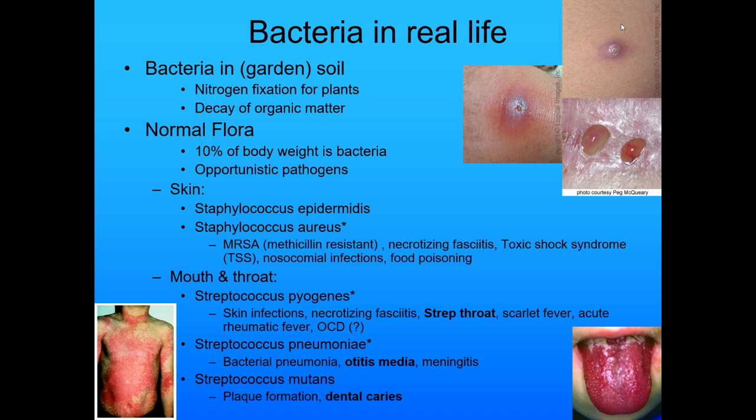Staphylococcus aureus causes methicillin-resistant Staph aureus, necrotizing fasciitis, toxic shock syndrome, nosocomial infections — those are hospital-acquired infections — and it can also cause food poisoning. Streptococcus pyogenes causes skin infections, necrotizing fasciitis, strep throat, and scarlet fever. Scarlet fever is very similar to strep throat — the bacterium simply carries an extra factor. It can also cause acute rheumatic fever and temporary OCD in children.